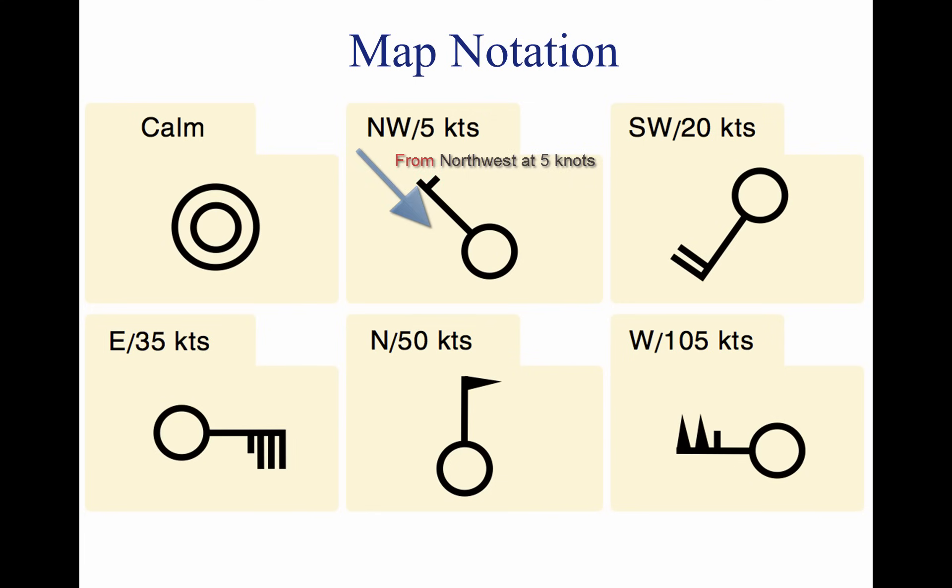The speed of the wind is depicted by barbs or pennants placed on the wind line. Each barb represents a speed of 10 knots, while half a barb is equal to 5 knots, and a pennant is equal to 50 knots.